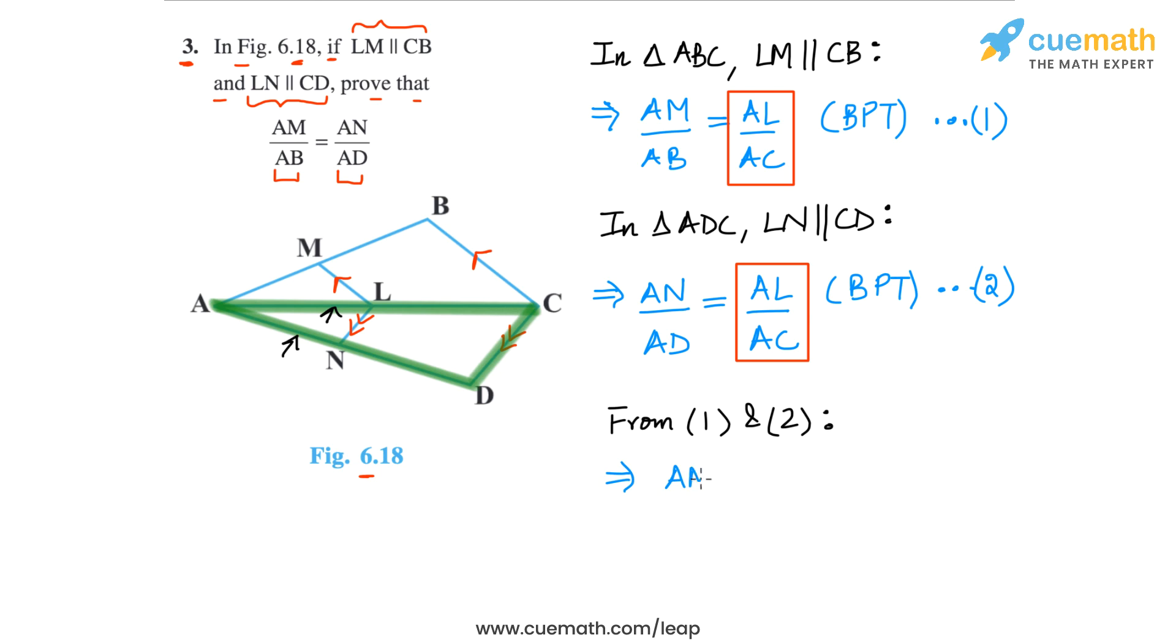So, AM by AB, the LHS of equation 1 will be equal to AN by AD, the LHS of equation 2. Okay. And this is what we had to prove.